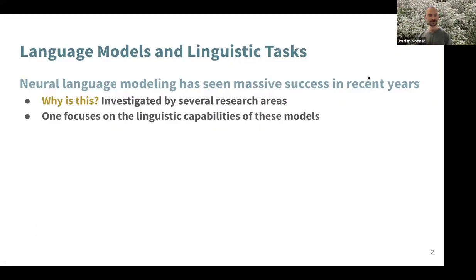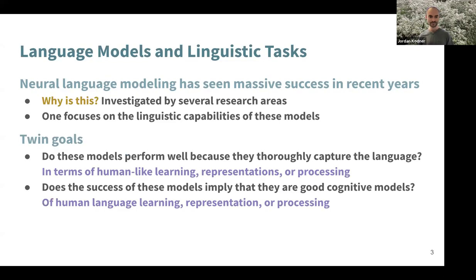We know that modern neural language models are good at a lot of things — they've completely changed certain aspects of our lives. So a natural question is, why are they so good at so many things? This has been investigated in several different areas. I'm a linguist, so my focus is on their linguistic capabilities. People have asked: do these models perform well because they thoroughly capture language in terms of human-like learning, representations, or processing?